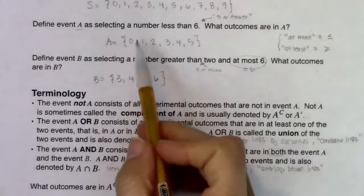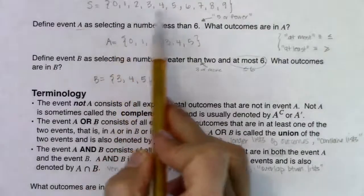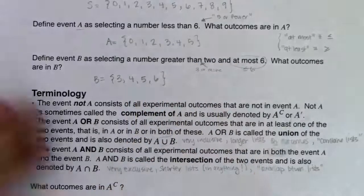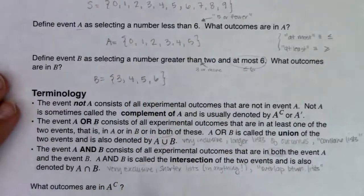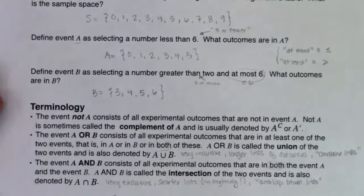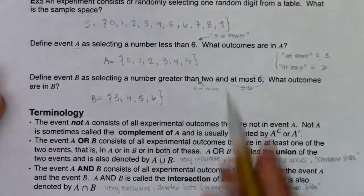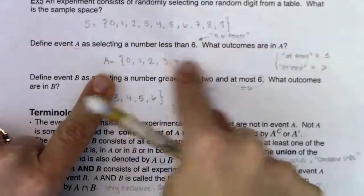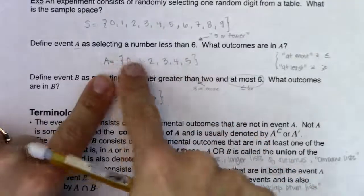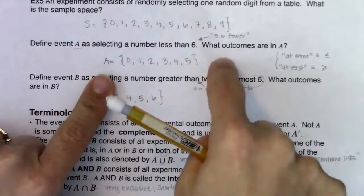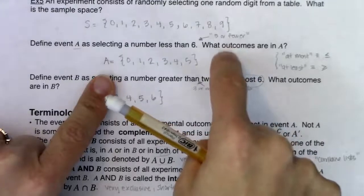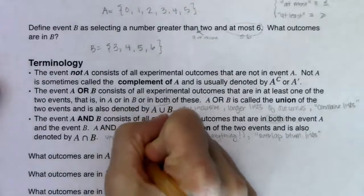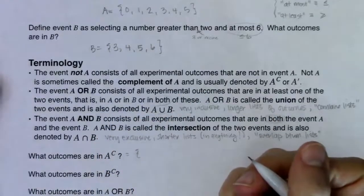The sample space is all numbers zero through nine. A contains zero, one, two, three, four, five. To find A complement, look at all numbers in the sample space that are not in A. Since zero through five are in A, six, seven, eight, and nine are not — so A complement is {6, 7, 8, 9}.